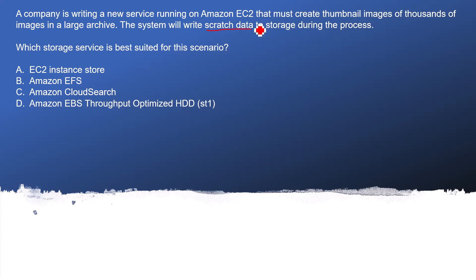Basically, they are using an Amazon EC2 instance and while processing there is a lot of business logic being executed. During this time, when data is being processed, it is creating a lot of scratch data for processing purposes. The question is directly asking where we can store this data while EC2 is processing and creating the thumbnail images.